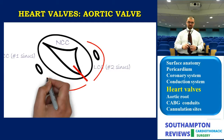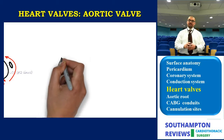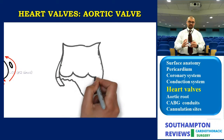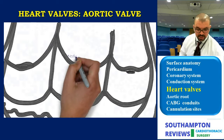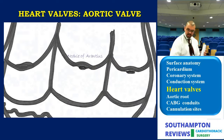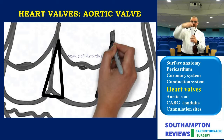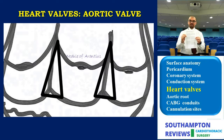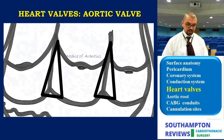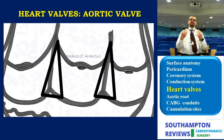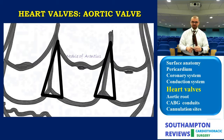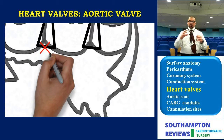Now we'll look at the structure of the valve in more detail. Opening the aorta — which is a tube — and laying it open, you can see inside: the aortic valve on top, with the mitral valve beneath. The fibroskeleton, as explained before, extends upwards between the leaflets in the form of what we call the inter-leaflet triangles, which are very important in the physiology and hemodynamics of the aortic valve, as we will see in the aortic root section.